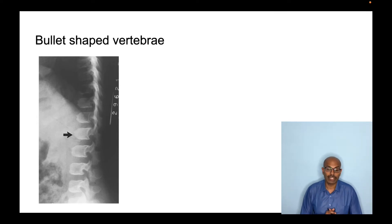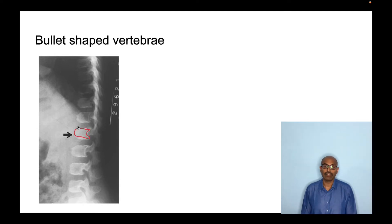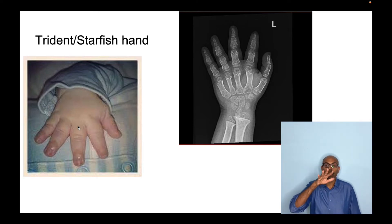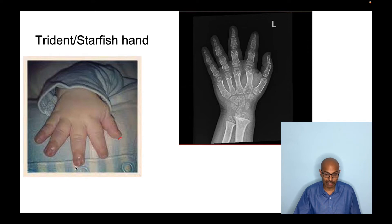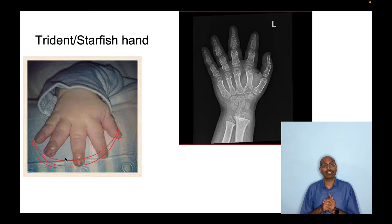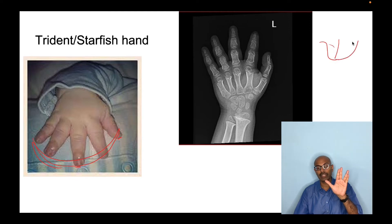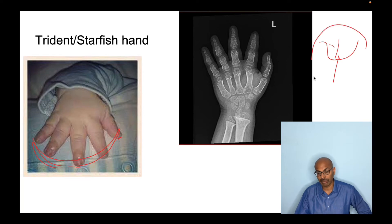On radiographs, you see bullet-shaped vertebrae, also called beaking of the vertebrae. You also see a trident or starfish appearance of the hand: the middle finger is short and all fingers appear of the same length, giving the starfish appearance. In the trident hand, the middle and ring fingers become divergent, forming three prongs — the thumb, the index and middle fingers together, and the ring and little fingers together.